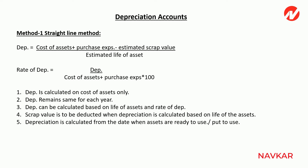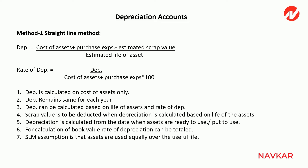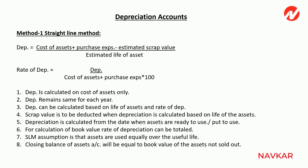Point three — depreciation is calculated from the date when the assets are ready to use or put to use. If no date is given, depreciation is calculated from the date of purchase. Point four — in SLM method, rate of depreciation can be totalled for calculation of book value; rate always applies to cost. The assumption of SLM method is that the asset gives equal benefit every year, which is why depreciation is the same. The asset account closing balance equals the book value of assets not yet sold.